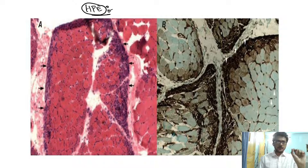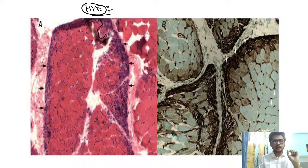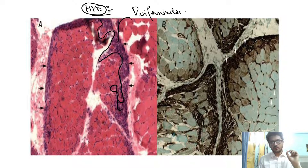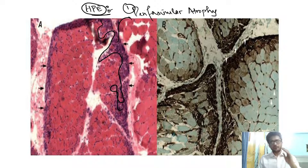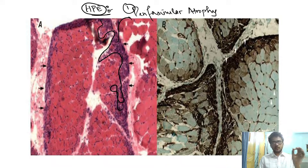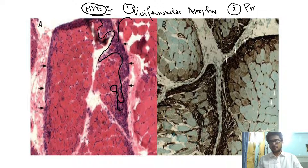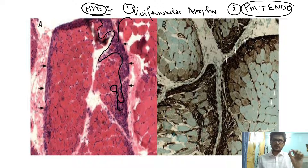Coming to histopathology — the most important finding in dermatomyositis is perifascicular atrophy. The inflammation seen in dermatomyositis is more in the perimysium compared to the endomysium. This is in contrast to polymyositis and inclusion body myositis, where endomysial inflammation is more predominant than perimysial inflammation.